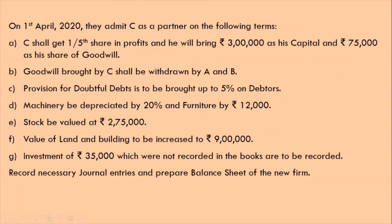Then what are the adjustments? On 1st April 2020 they admit C as a partner on the following terms: C shall get one fifth share in profit and will bring Rs 3 lakh as his capital and Rs 75,000 as his share of goodwill. Goodwill brought by C shall be withdrawn by A and B. Then provision for doubtful debt is to be brought up to 5% on debtors. For revaluation: machinery be depreciated by 20% and furniture by Rs 12,000; stock to be valued at Rs 2,75,000; value of land and building to be increased to Rs 9 lakh; investment of Rs 35,000 not recorded in the books are to be recorded. Record necessary journal entries and prepare balance sheet of the new firm.